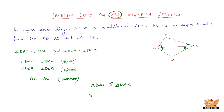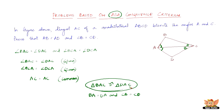Therefore, by the ASA congruence criterion, triangle BAC is congruent to triangle DAC. Therefore we have BA equal to DA and CB equal to CD. Since we proved that two triangles are congruent, every other corresponding part is also equal, so AB equals AD and CB equals CD.